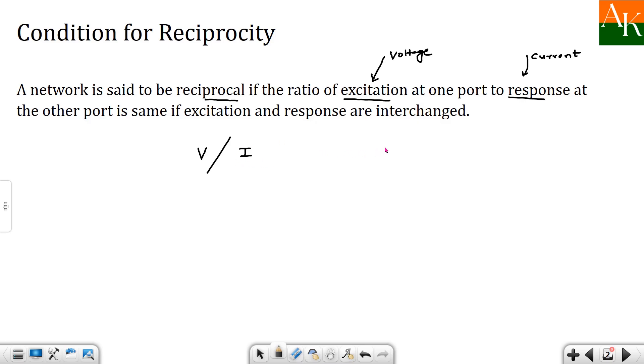Then you have to interchange: apply voltage at the second port and calculate current at the first port. We always take the ratio of voltage to current. If these two ratios are the same,